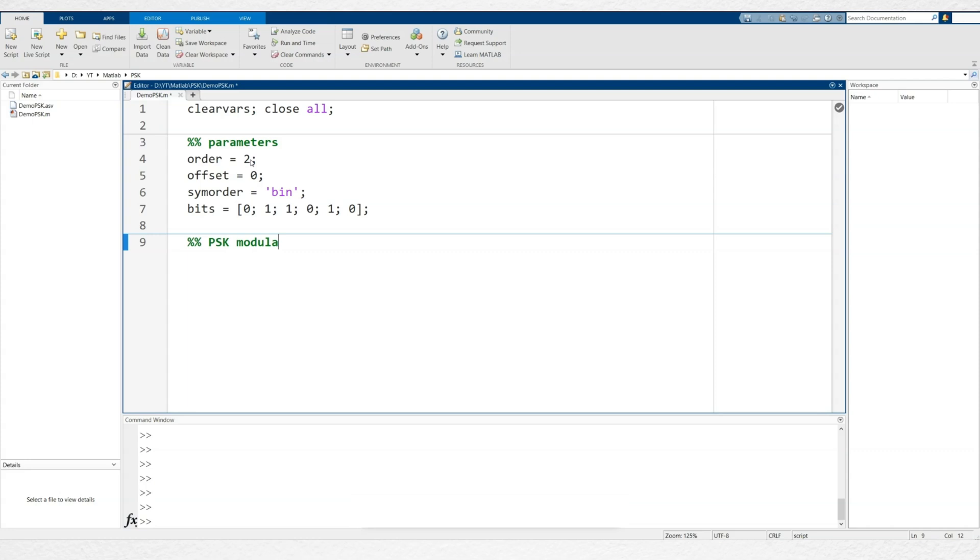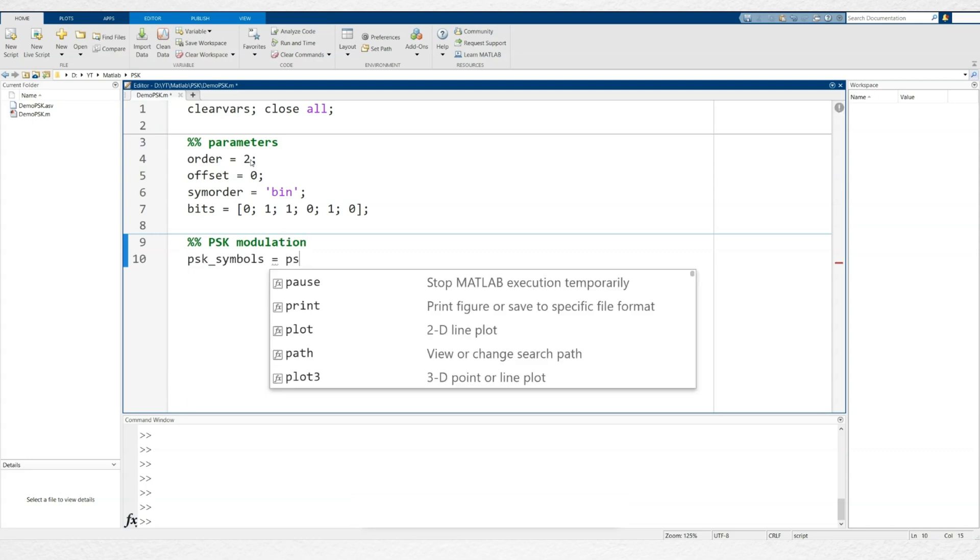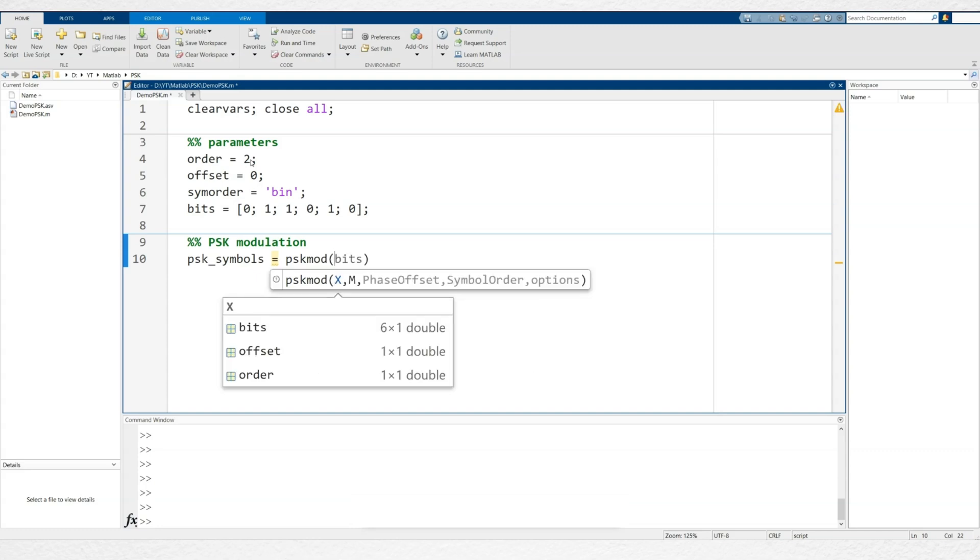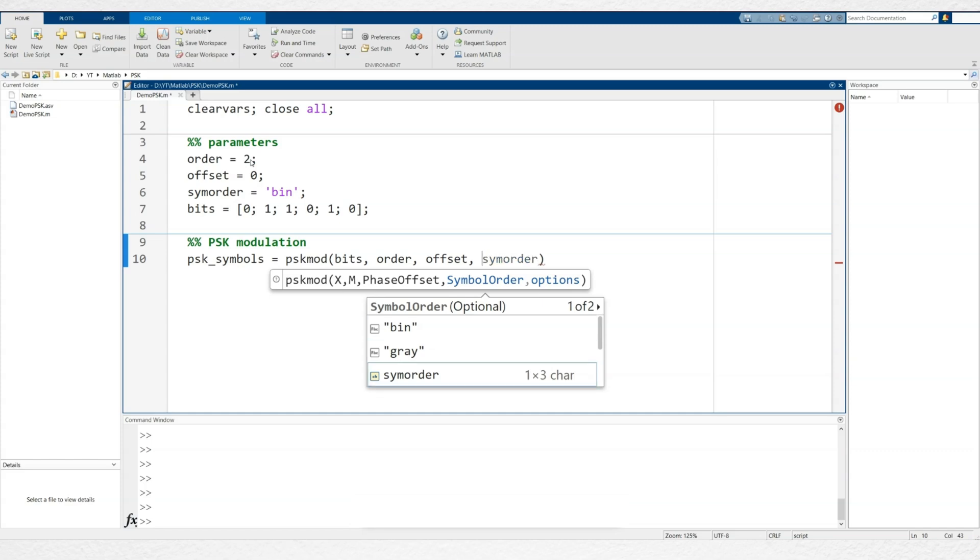To modulate the bits, we'll use the PSK modulator function. The first parameter of this function is either the bits in binary format, or the symbols expressed as integers. The second parameter is the modulation order, which will be BPSK in our case. Next, we specify the constellation offset, followed by the symbol order.